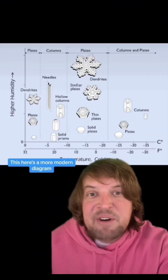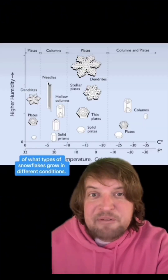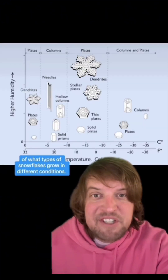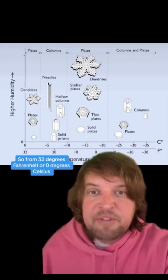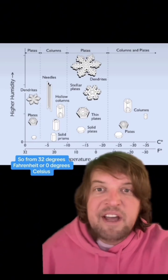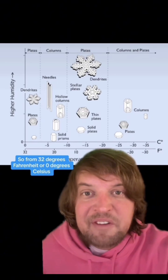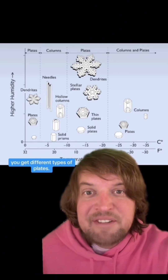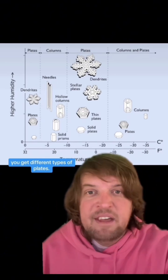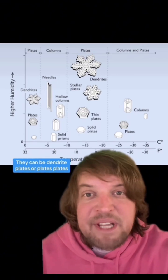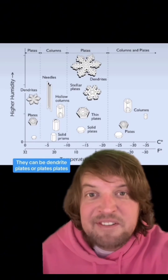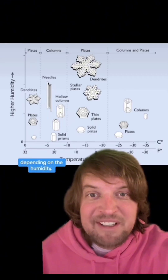This here is a more modern diagram of what types of snowflakes grow in different conditions. So from 32 degrees Fahrenheit or 0 degrees Celsius, you get different types of plates — they can be dendrite plates or plates plates, depending on the humidity.